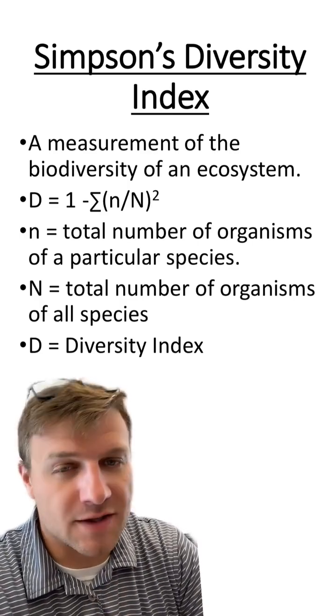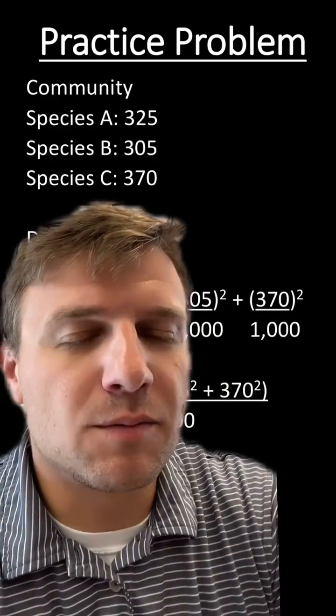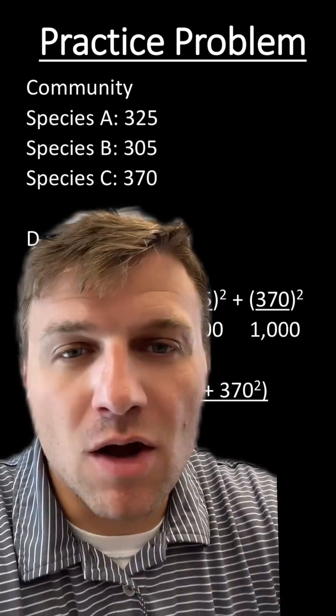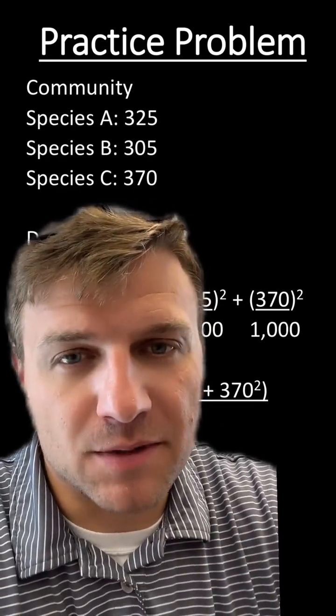Let's do a practice problem using this equation. So this is going to be our community that we're going to start with. We have three different species, A, B, and C. And as you can tell, all three species are going to have around the same numbers.